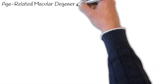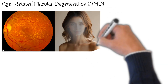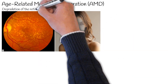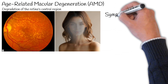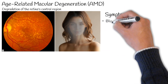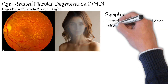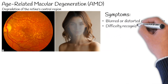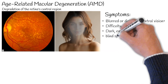The second most common disease causing progressive visual loss is age-related macular degeneration, AMD. In this case, there is degradation of the retina's central region, which is vital for acute and detailed vision. The most important sign of AMD is blurred or distorted central vision.